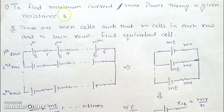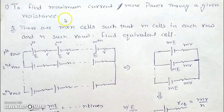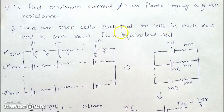A different type of question asks for the maximum current or maximum power through a given resistance using a number of cells. Break the problem into two parts: there are m×n cells, with m cells in each row and n such rows. You need to find the equivalent EMF and equivalent resistance of the combination.